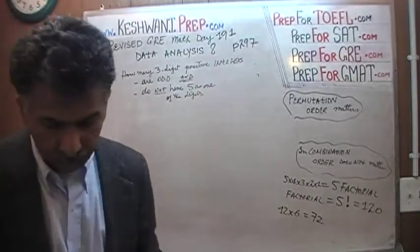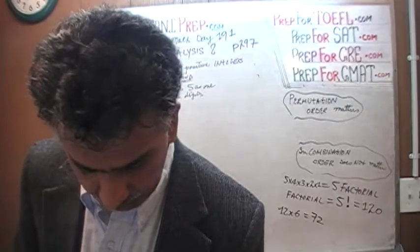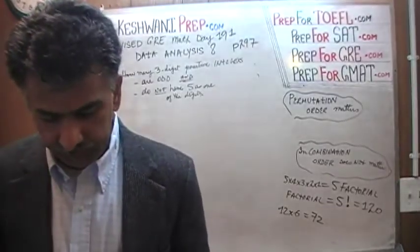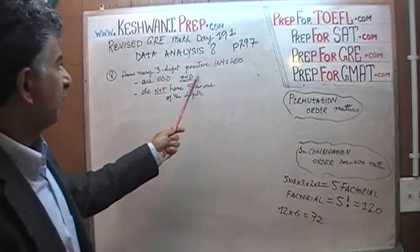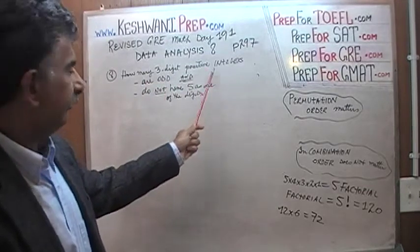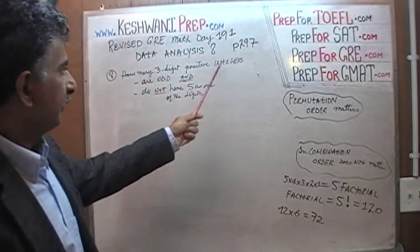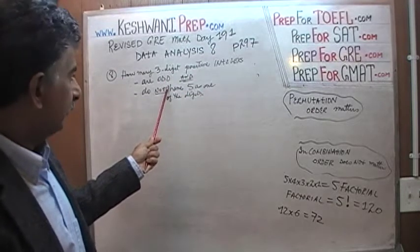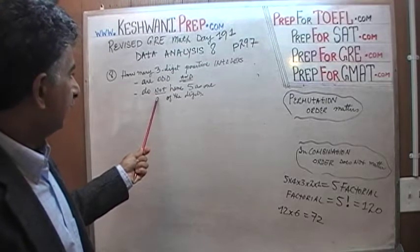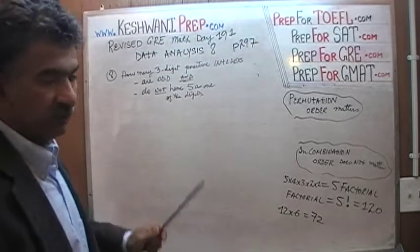Here is the problem, problem number 8. Please turn to page 297 and read the problem to yourself. It says how many 3-digit positive integers are odd - that is the first condition we have to fulfill - and that it does not have 5 as one of its digits.